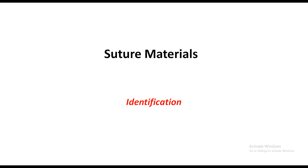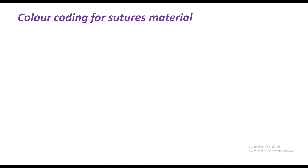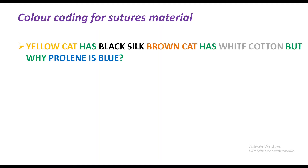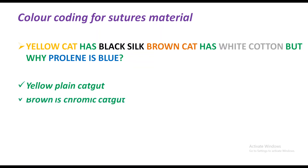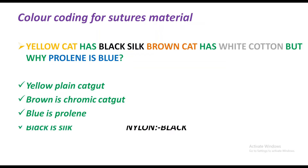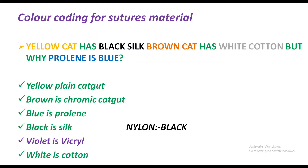What we will learn from this is identification, classification, and question and answers about suture material. There is color coding for suture material, and the mnemonic is: yellow — plain catgut; brown — chromic catgut; blue — Prolene; black — silk; violet — Vicryl; and white — cotton.